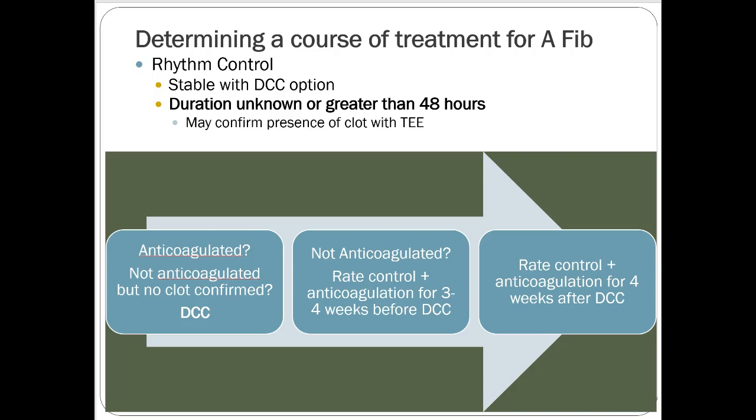For a stable patient with AFib of unknown duration or greater than 48 hours, the risk of thrombus formation in the atria goes up substantially. You must assess their anticoagulation status. If they're anticoagulated, you can proceed with direct current cardioversion. If not, you need to confirm the absence of a clot via transesophageal echocardiogram (TEE). If you can't confirm — or they aren't anticoagulated — rate control plus anticoagulation for three to four weeks, then bring them back for direct current cardioversion. Rate control plus anticoagulation has very similar outcomes to cardioversion, whether pharmacologic or electrical.